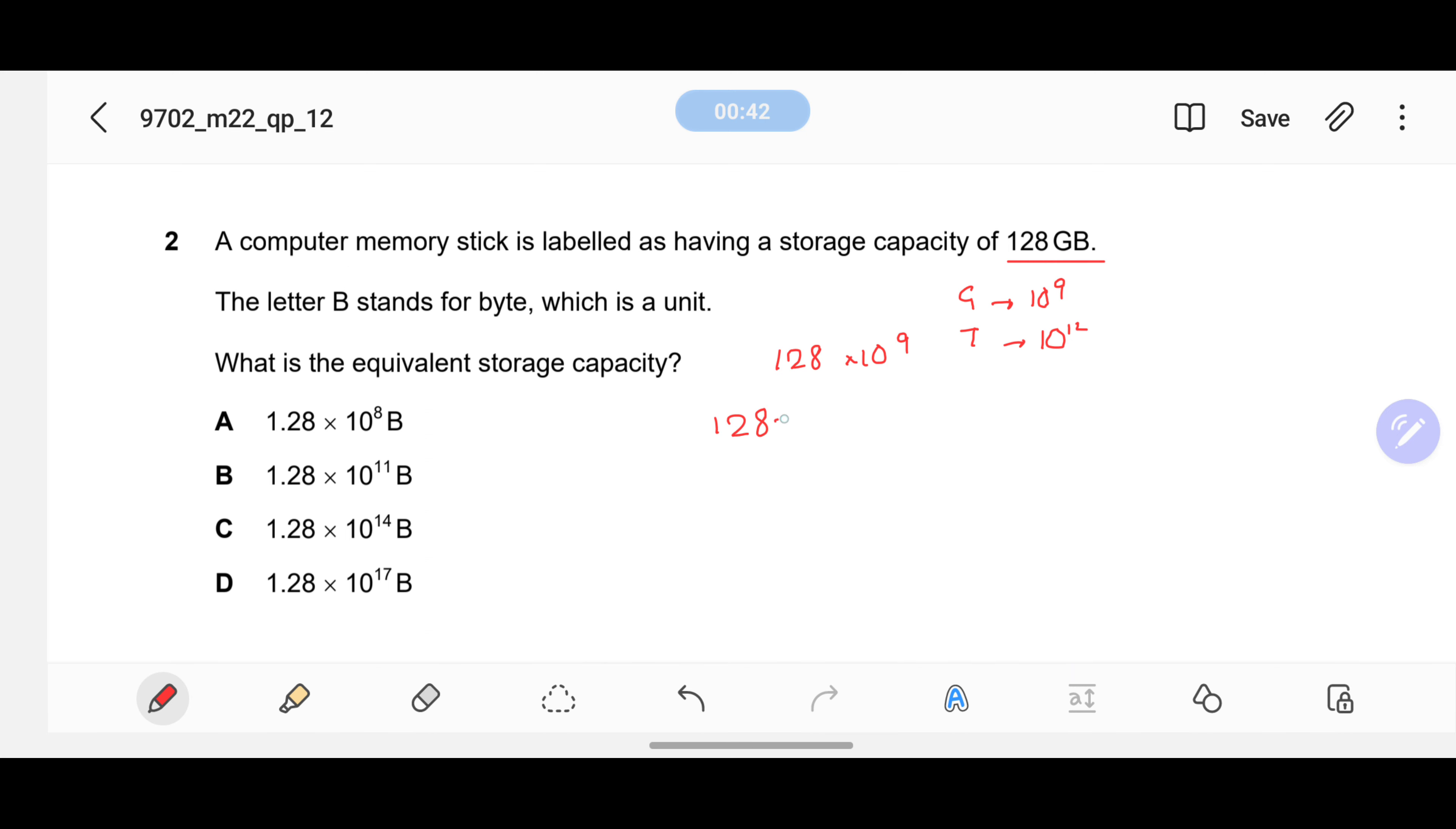128 times 10 to the exponent 9 is mentioned here. This means I can write it as 128.0 × 10^9. Now if I shift this decimal point forward to the left, as I keep shifting it left, this exponent number will keep increasing.